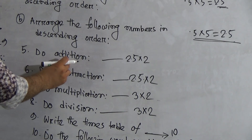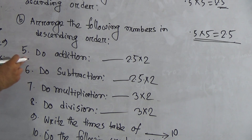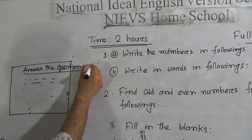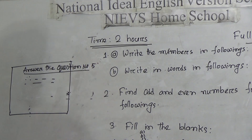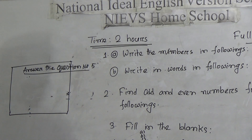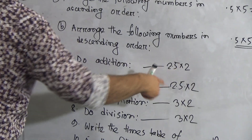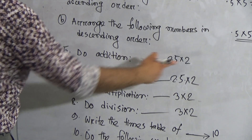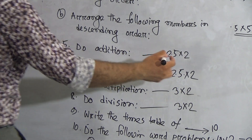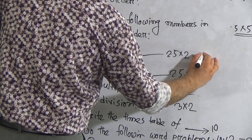After finishing number four, go to question number five. Question five is to do addition. You will write the answer in your answer script. There are two summations and each summation contains 2.5 marks, which means question five is worth 5 marks in total.